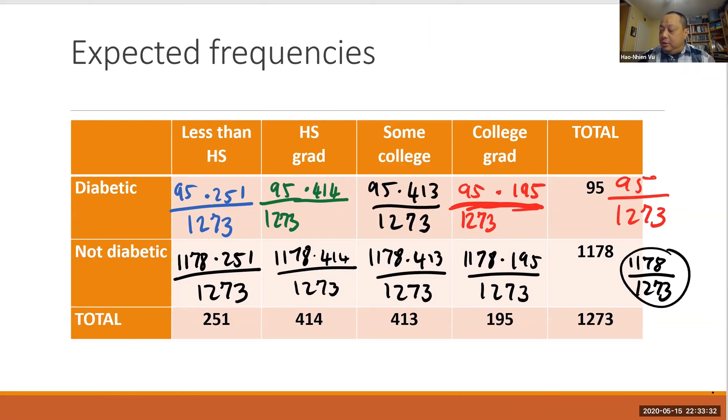And a pattern emerges. All the denominators are all the same, and they are all this number here - the grand total in the lower right corner. And the numerators are all a product of two numbers. And let's see what those two numbers are. The first number - let's take the box that says some college, diabetic - then the first number is the 95 that comes from here, and the second number is 413, which comes from there. And if you look at all the other boxes, you see that the same pattern obtains in each box - that the numerator consists of the total for that row times the total for that column. So it looks like the formula should be row total times the column total divided by the grand total, which is the total number of people that the researcher found. So the grand total is actually the sample size.